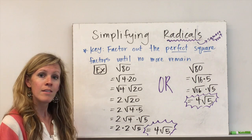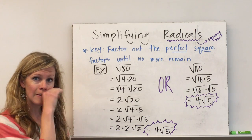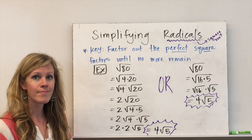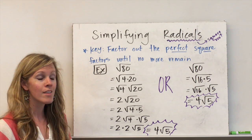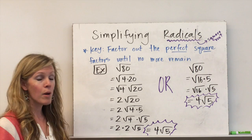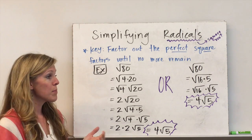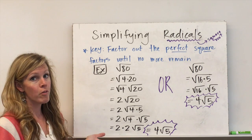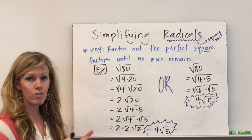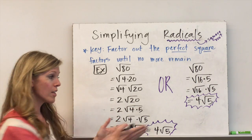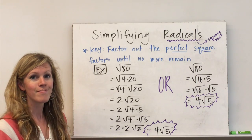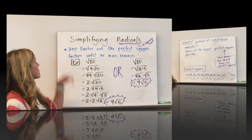Does it matter which of these methods I use — if I take out the biggest one, or if I just start with the one I can think of the easiest? It does not. Think about when you're simplifying a fraction — maybe it's divisible by 4, but you didn't see that, and you divided by 2 first, and then by 2 again. You still should get to the same simplest form answer.